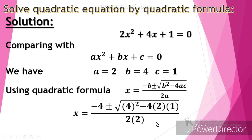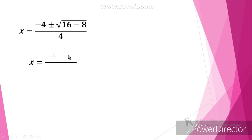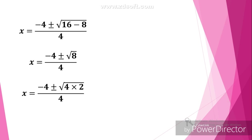Now simplifying this expression: 4 squared is 16, so we write x equals minus 4 plus or minus the square root of 16 minus 8, divided by 4. Since 16 minus 8 is 8, we have minus 4 plus or minus the square root of 8, divided by 4.